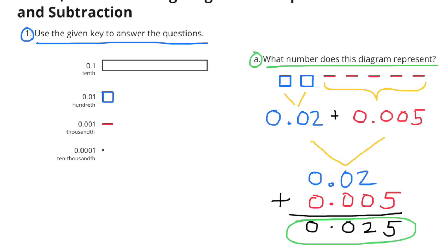It has 2 squares that represent 1 hundredths each, so that would be 2 hundredths, and it has 5 dashes that each represent 1 thousandths. So, two hundredths plus five thousandths equals twenty-five thousandths.